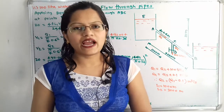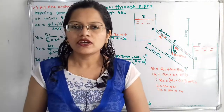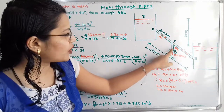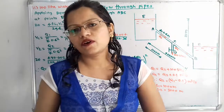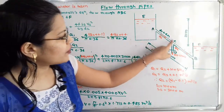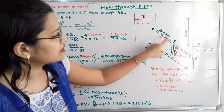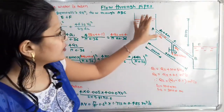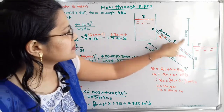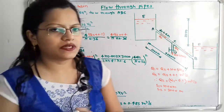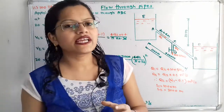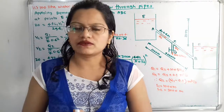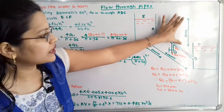We have to find the discharge to the lower reservoir in two cases. In the first case, the small pipe is closed, so water is flowing only through the single pipe A to B. We consider the pipe of length 4000 m and diameter 0.6 m. Since minor losses are neglected, we only consider major losses due to friction. The head loss due to friction is equal to the difference between the two reservoirs, which is 20 m.